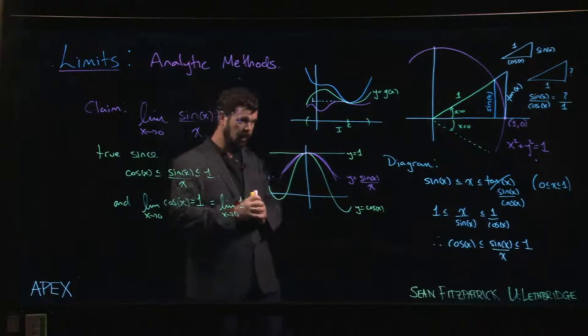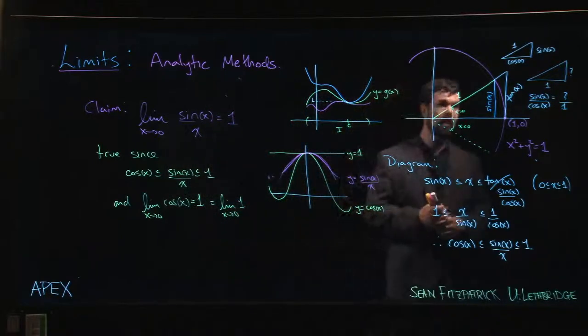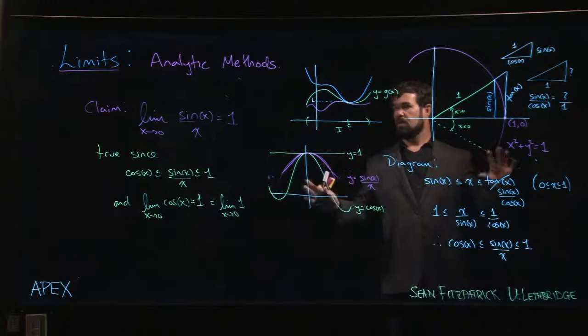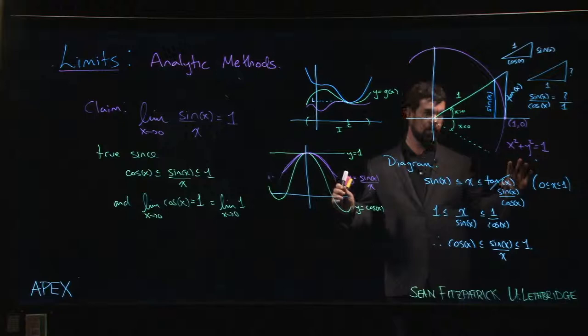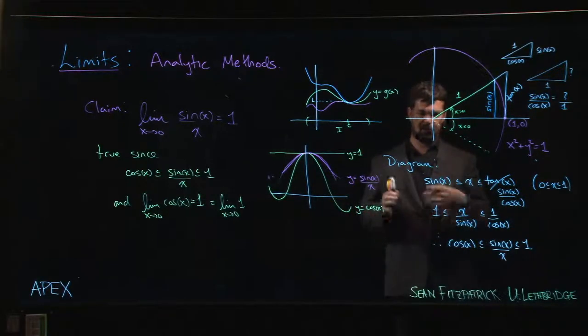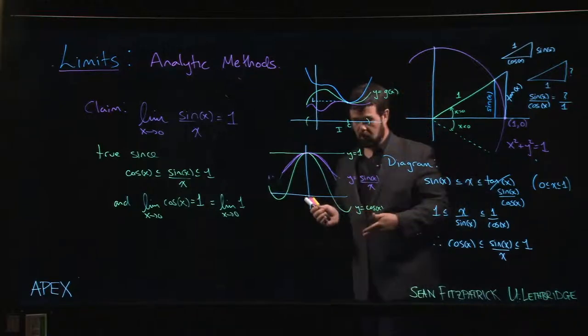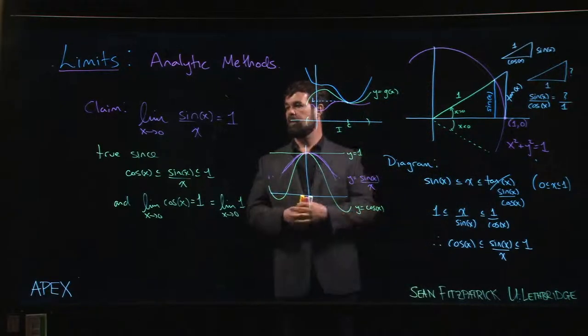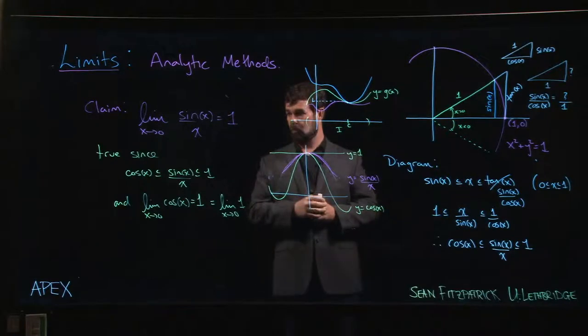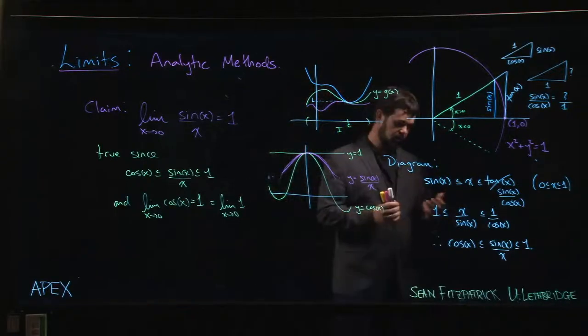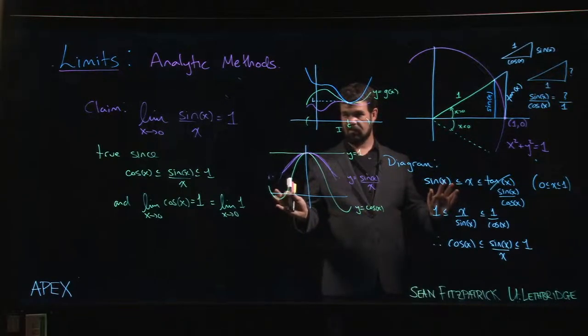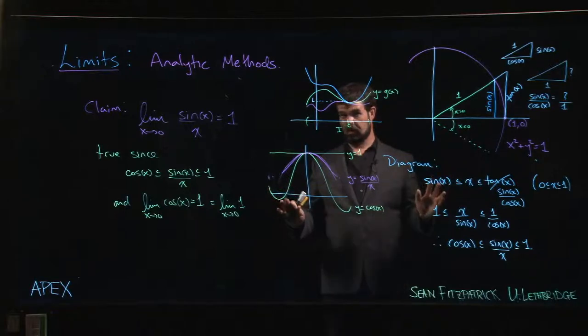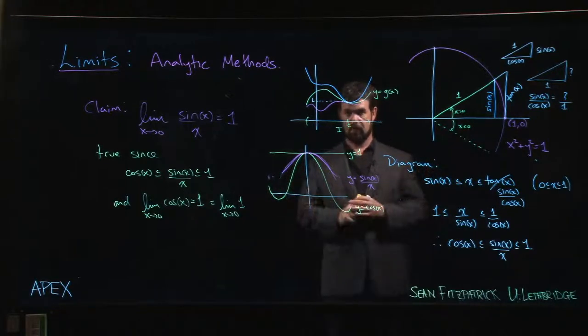One final word of warning: none of this works if we're not in radians. If we're not in radians, then that arc length formula doesn't work. We have to make some adjustments—there's going to be a pi over 180 showing up somewhere along the way. This limit won't equal 1. The easiest way to deal with this is to just agree that we don't ever work in degrees. If we're doing calculus, we always stick to radians.